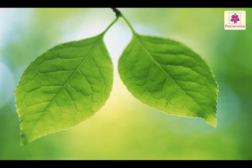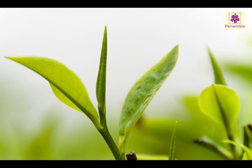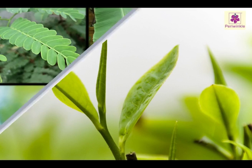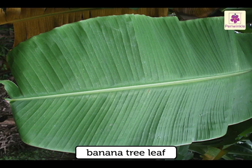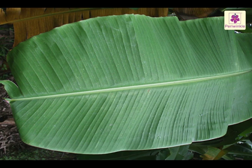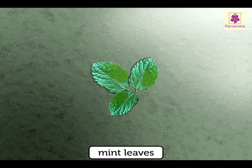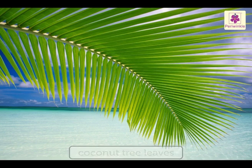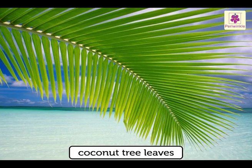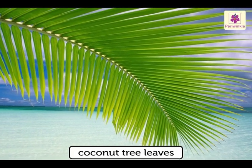The leaves of a plant are mostly green in colour. They are of different types and sizes. Banana tree has big leaves. Mint has small leaves. And coconut trees have feather-like leaves.